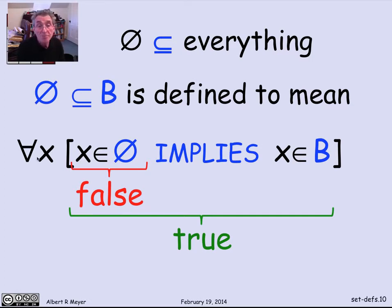I'm not even going to look at B. I can see that x is in empty set as false. So the whole implication is true. And so what I'm saying is that for everything, every x, something that's true has to be true. Well, it is. And that's why the empty set as a subset of B satisfies this definition in a formal way. And this is an example of why that convention that false implies anything is convenient and is made use here.